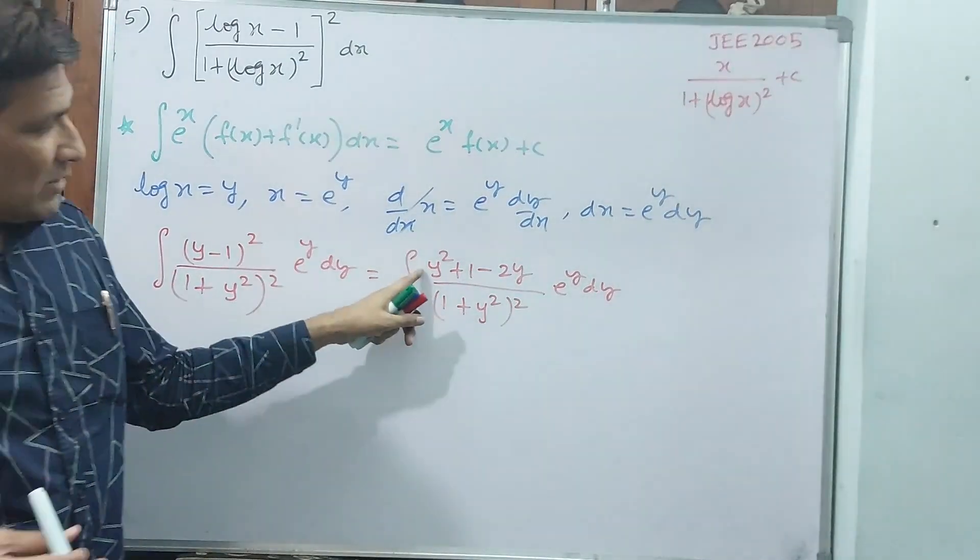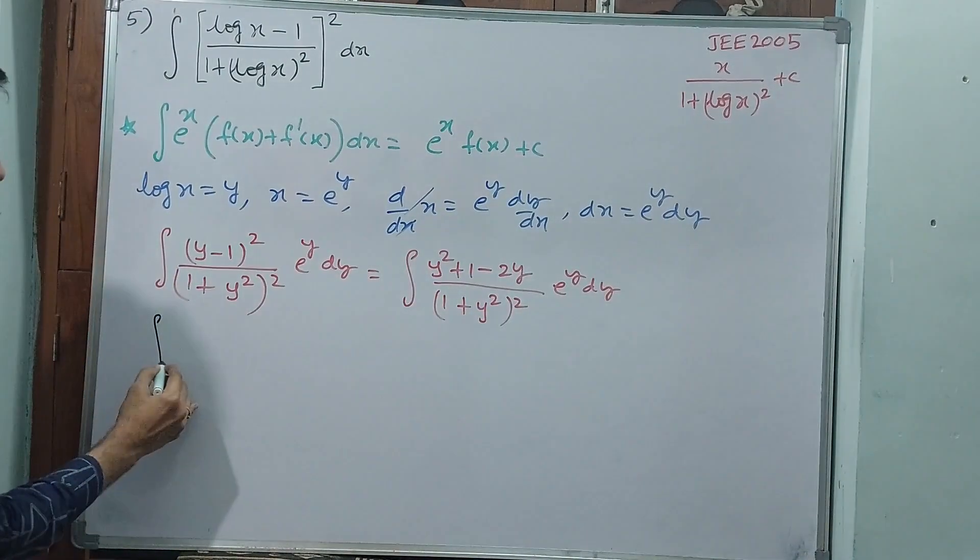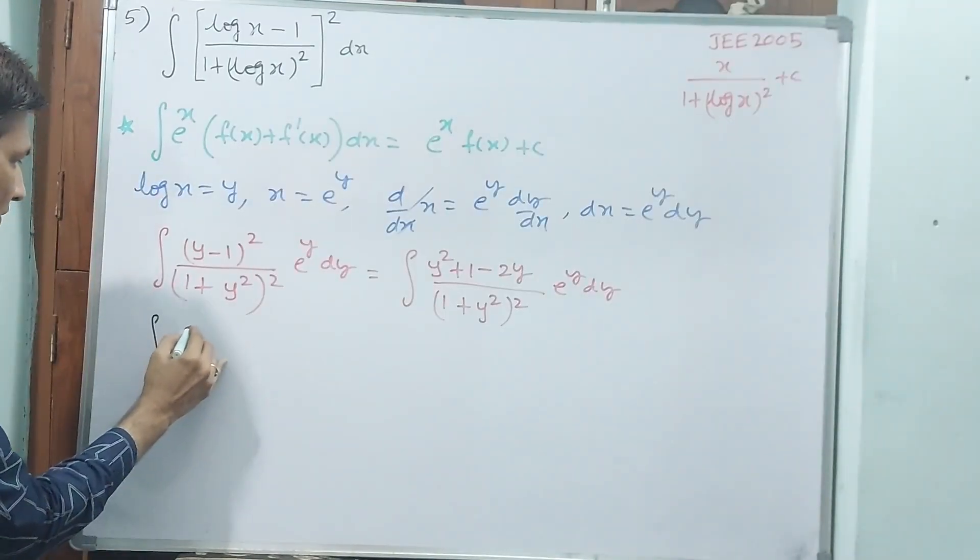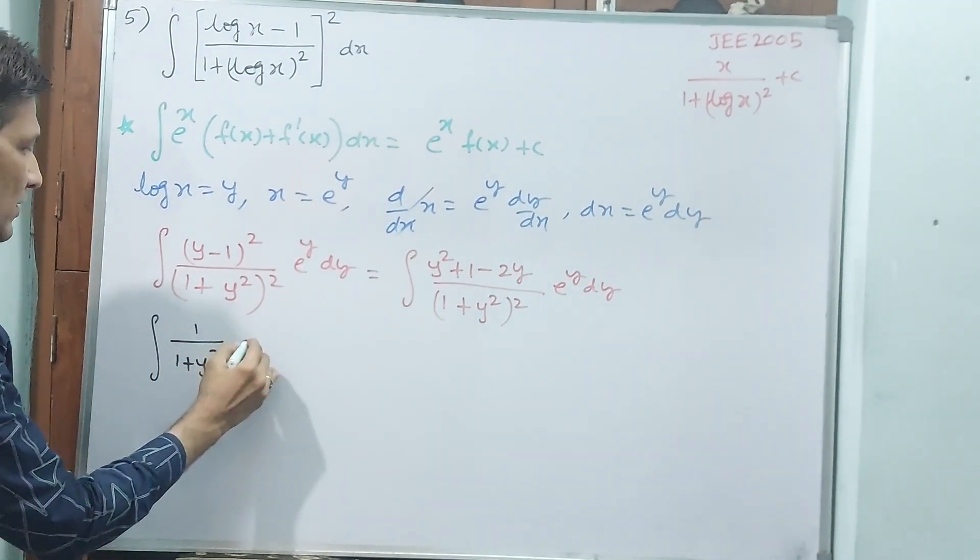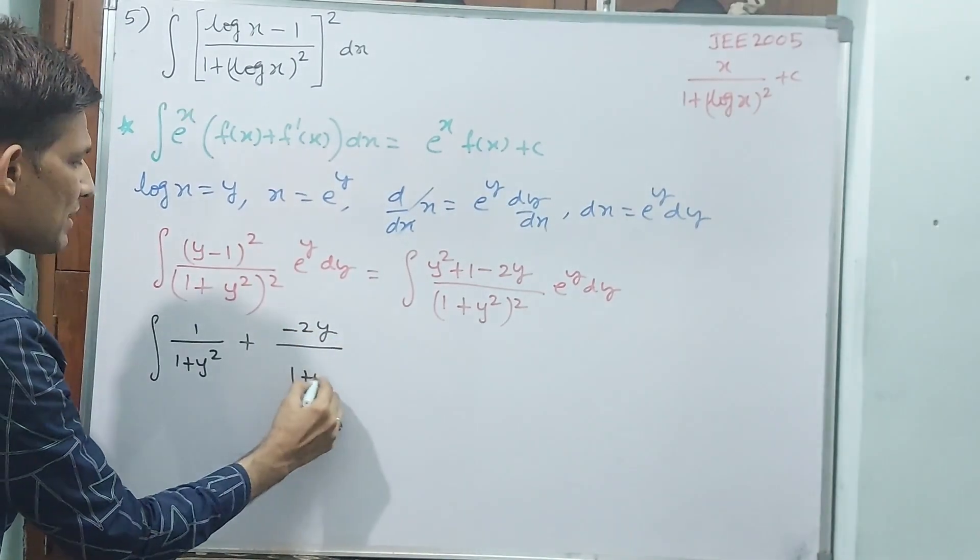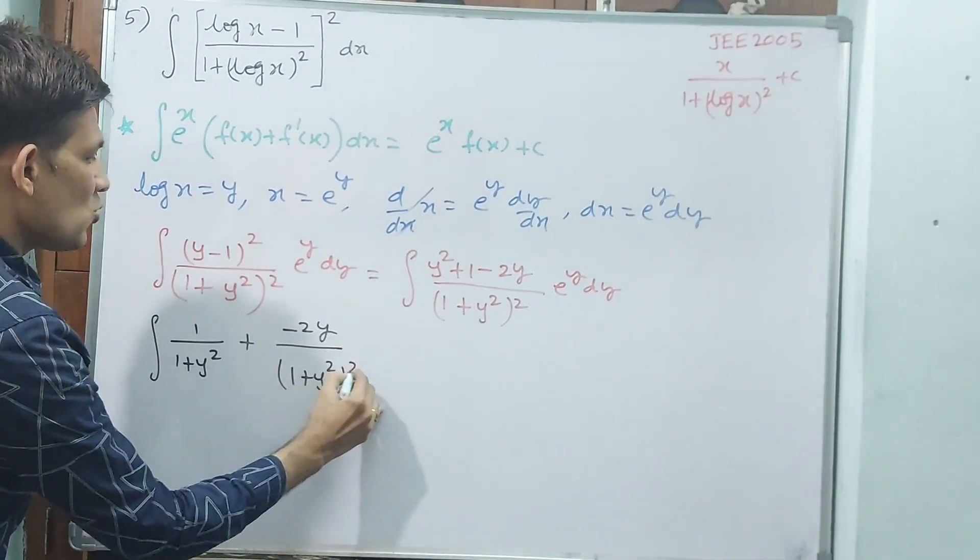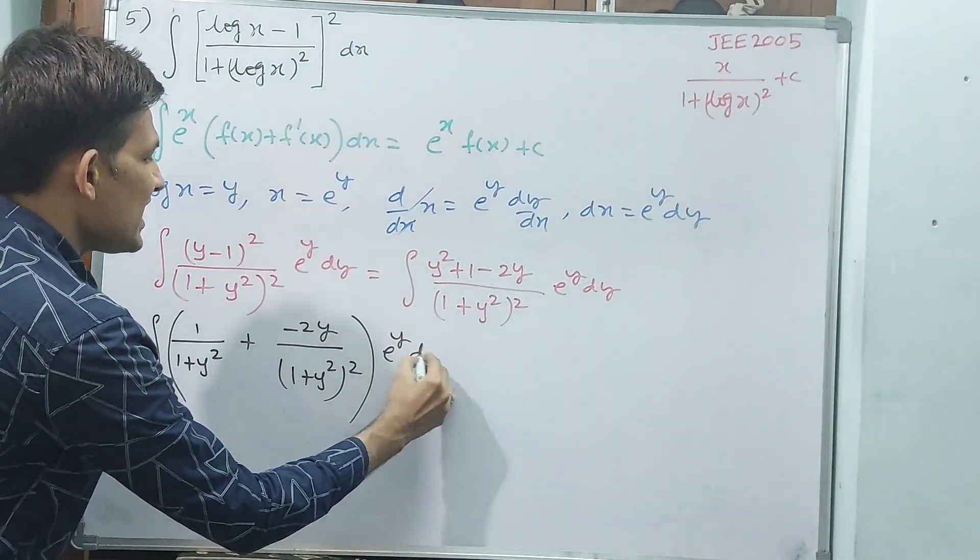Now, observe carefully, y square plus 1, y square plus 1 square. If you separate, see how I am separating. Integral 1 by 1 plus y square, plus minus 2y by 1 plus y square, whole square into e power y dy.